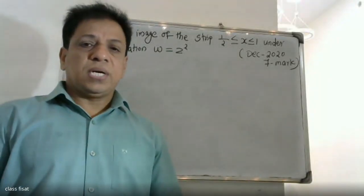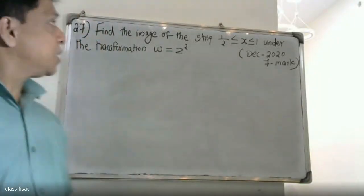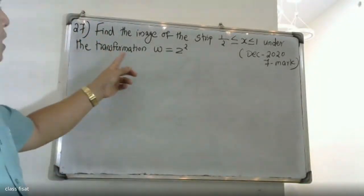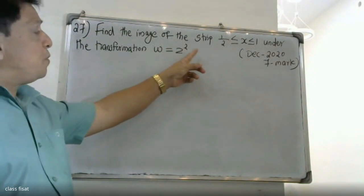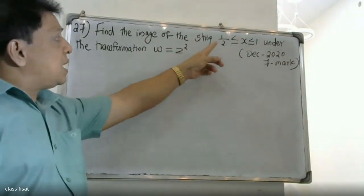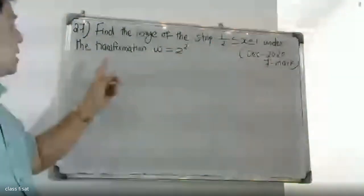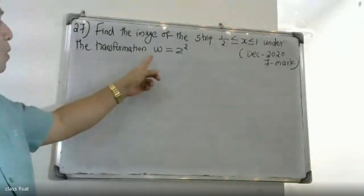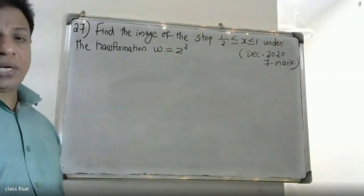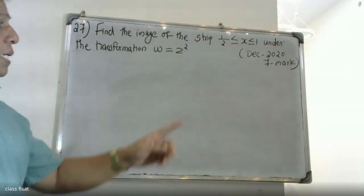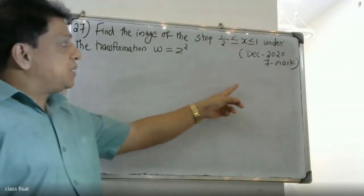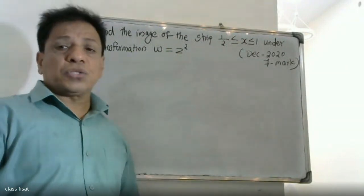Good morning, students. Find the image of the strip 1/2 ≤ x ≤ 1 under the transformation w = z². This is a marker question.